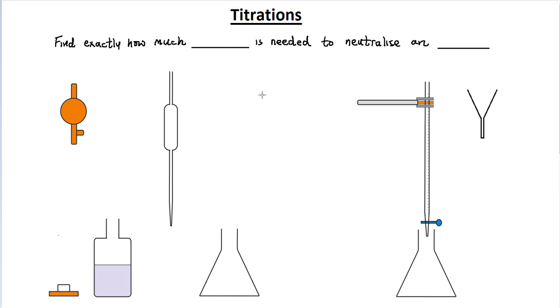In this lesson we're going to continue looking at neutralization reactions, and in particular the process of titration. In a titration we're going to find out exactly how much acid is needed to neutralize an alkali, or vice versa - how much alkali is needed to neutralize an acid.